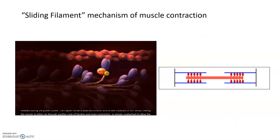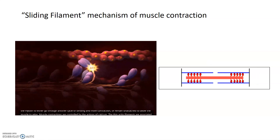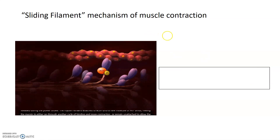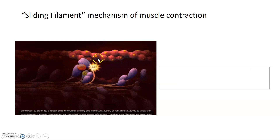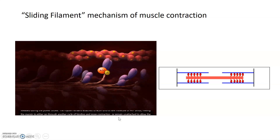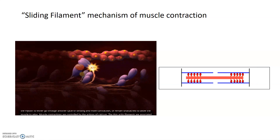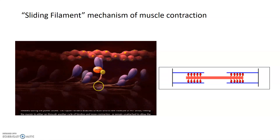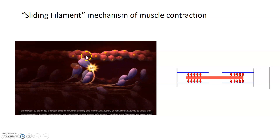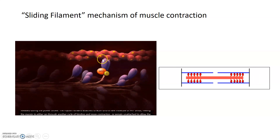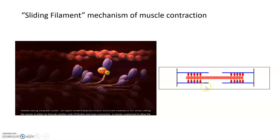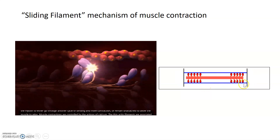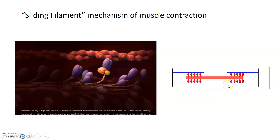What that looks like in an animated view can be seen here. ATP comes in and cocks the head back, hydrolyzes, binds to actin and pulls it forward. Cocks back, binds, pulls forward. ATP binds, cocks it back, it can then hydrolyze. The ADP-bound form of the myosin head binds to actin and pulls it forward. And this happens many, many times so that the sarcomere can contract.